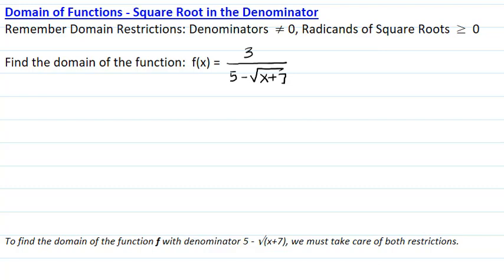To find the domain of the function f with denominator 5 minus square root of x plus 7, we must take care of both restrictions: denominator not equal to zero and radicand of square root greater than or equal to zero.